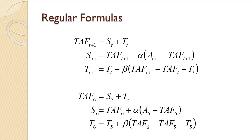The formulas for continuing the calculations after seeding are shown on the slide. taf sub t plus 1 equals s sub t plus t sub t — this is your forecast for the next period. We have already calculated s5 and t5, so we are ready to compute taf sub 6. s sub t plus 1 equals taf sub t plus 1 plus alpha times the quantity of a sub t plus 1 minus taf sub t plus 1. t sub t plus 1 equals t sub t plus beta times the quantity taf sub t plus 1 minus taf sub t minus t sub t. All of those t's and t plus ones can get confusing, so the formulas have been rewritten for period 6 on the slide.